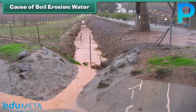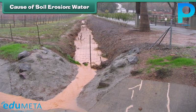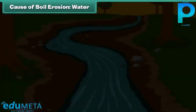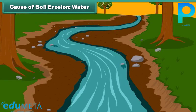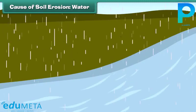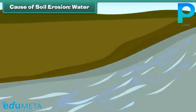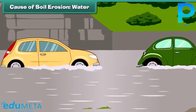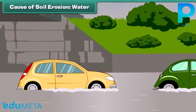The most common factors causing soil erosion are water and wind movements. Water flowing through the ground carries away soil with it. During rain, the soil particles are detached by raindrops and carried away by running water. Floods are also a main cause of soil erosion.